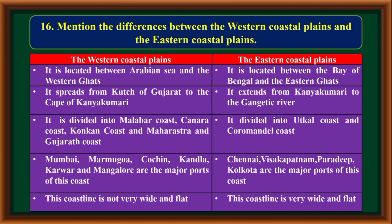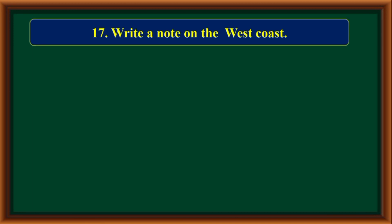The eastern coast is divided into Utkal coast. Major ports of the western coast: Mumbai, Marmugao, Kochi, Kandla, Karwar, and Mangaluru. Major ports of the eastern coast: Chennai, Visakhapatnam, Paradip, and Kolkata. The western coastline is not very wide and flat, whereas the eastern coastline is very wide and flat.